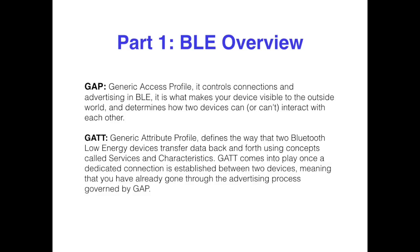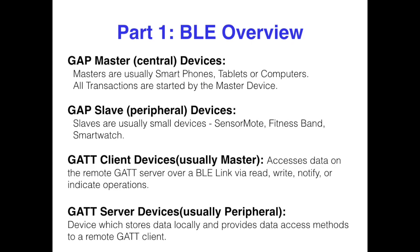Two important aspects of Bluetooth Low Energy are the GAP and GATT. The GAP handles connections between devices. The GATT handles data transfer between devices, which consists of reading and writing to characteristics, as well as notifications and indications. On the GAP side of things, you have your masters and slaves. On the GATT side of things, you have your clients and servers.